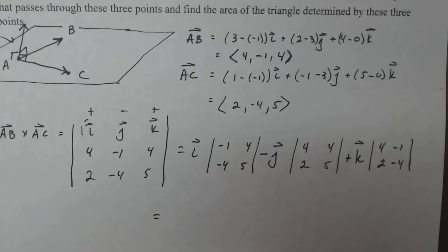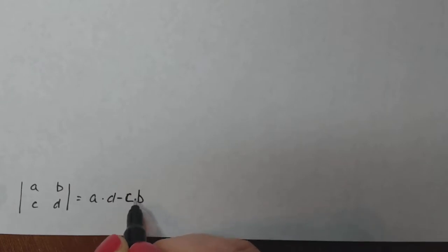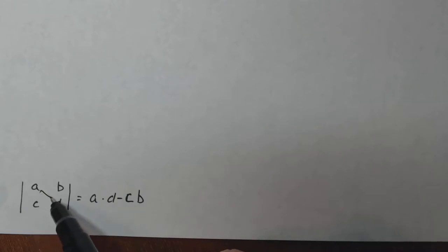So we have to find the determinant of a two by two matrix. How do I do that? Let's make a little note down here. The determinant of a two by two matrix is a times d minus c times b. That's just a reminder.